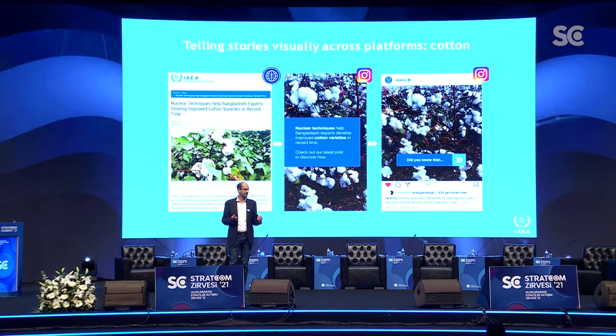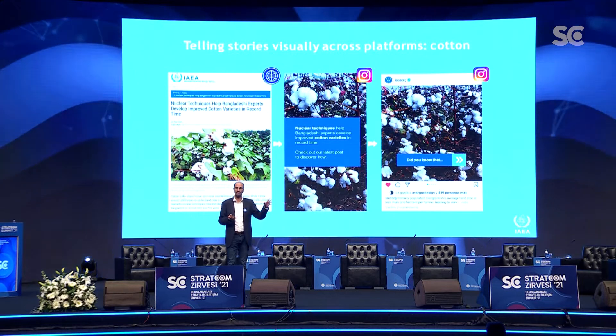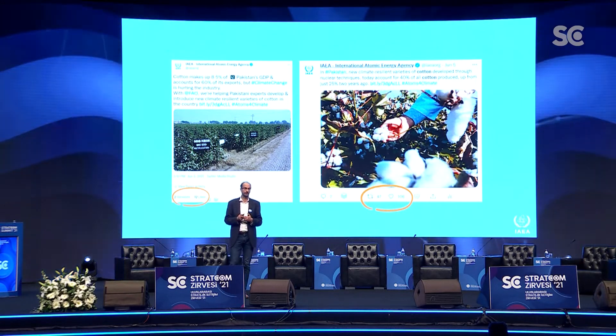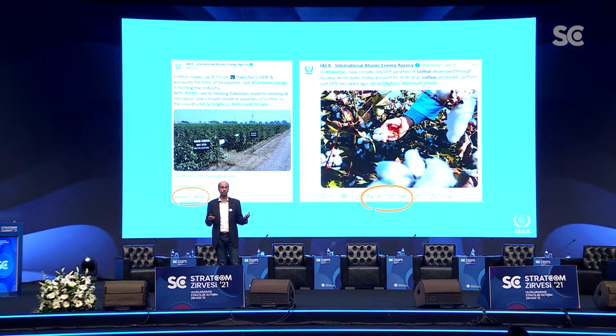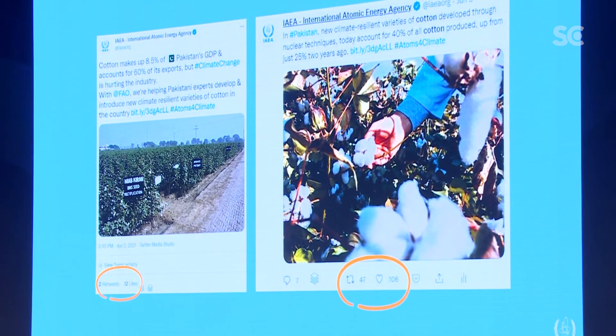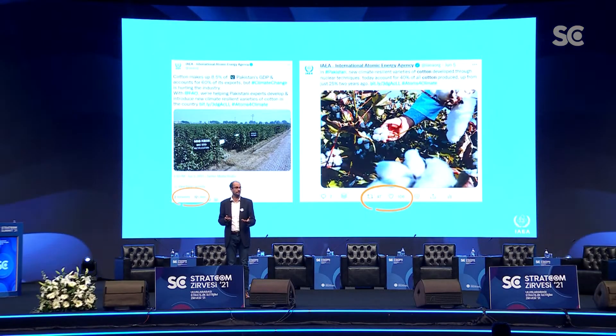Another example is an article about using nuclear technology to produce improved varieties of cotton in Pakistan — and no, the cotton does not become radioactive. I'm showing the website article, an Instagram post, and an Instagram story with the same content optimized to the medium. We also ran an experiment on Twitter with this article: promoting it with the original photo we received from scientists in Pakistan got only two retweets — basically zero engagement. We then switched to another photo and got 47 retweets, which for a niche scientific story is a very good number.